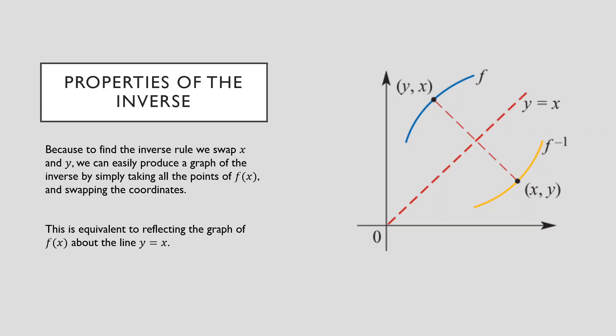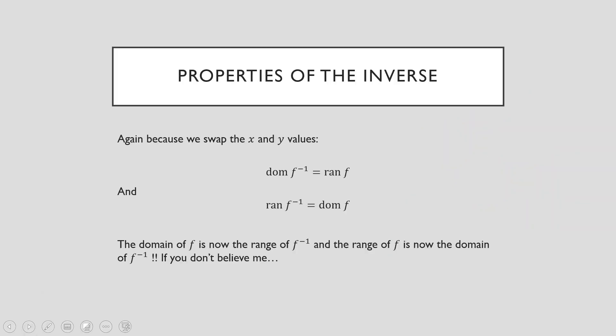Now that process might not be very apparent to you, so I'm hopefully going to show you how that works in the next slide. But that's all you're doing — to produce the graph of the inverse, we can reflect the graph of our original function about this line y equals x. Consider this your mirror line. I'll show you in a second how and why this works.